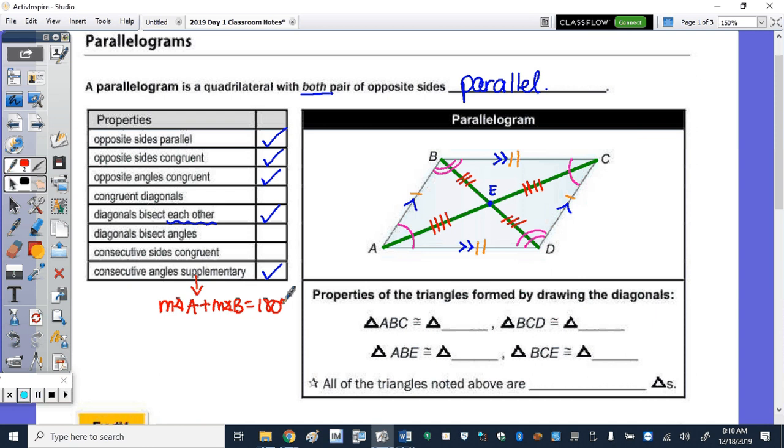Okay, now we're going to take a look at the properties of the triangles that are formed within that parallelogram. Okay, so triangle ABC. So if we highlight ABC, it's this triangle right here. Which triangle is that congruent to?